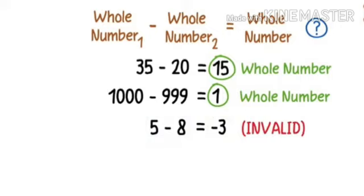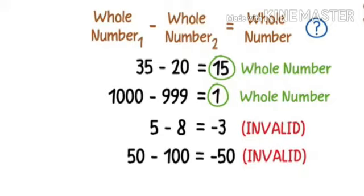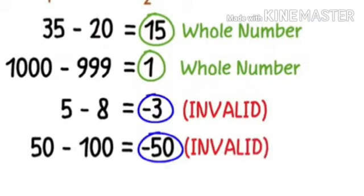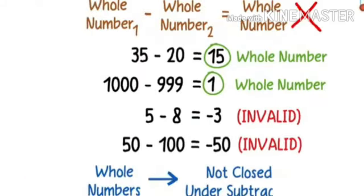Similarly, if you subtract 100 from 50, the answer that you will get is a negative number. Both numbers are not whole numbers. So we can say whole numbers are not closed under subtraction.